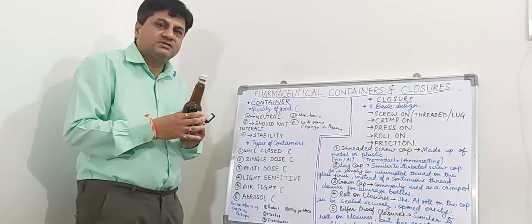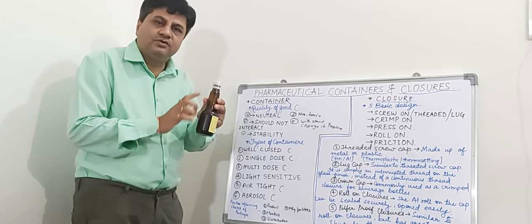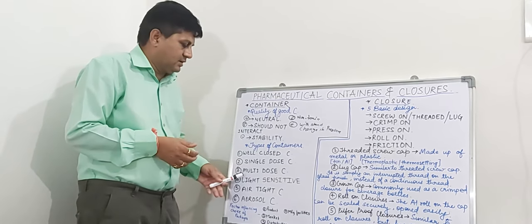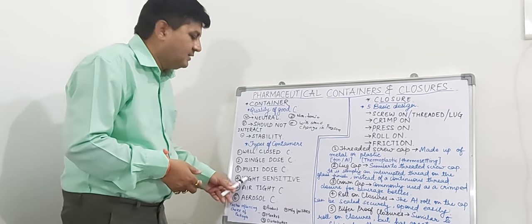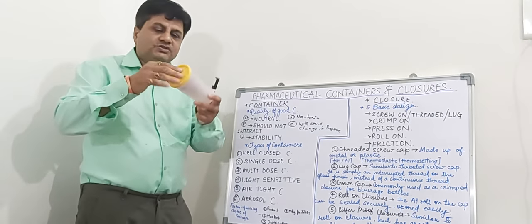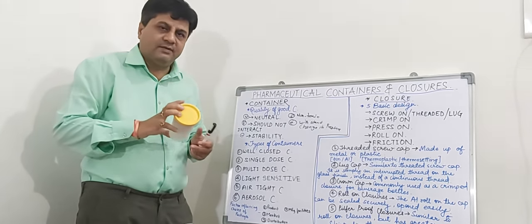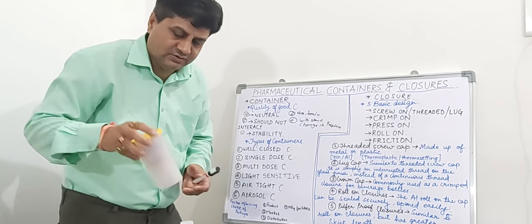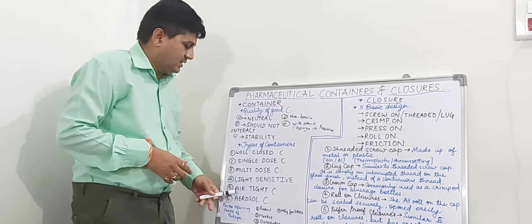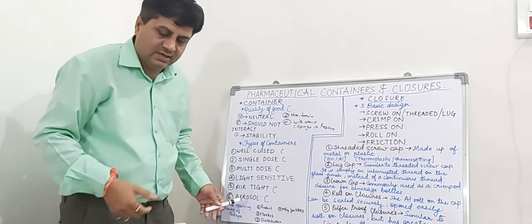The light-sensitive container is used for substances which have sensitivity towards light. We have to use containers that protect our product or substance against the effect of light. The airtight container is totally airtight — it prevents the entry of air from the environment, thereby protecting against oxidative stress which occurs when the product comes in contact with oxygen.